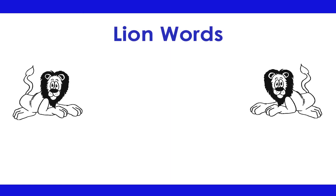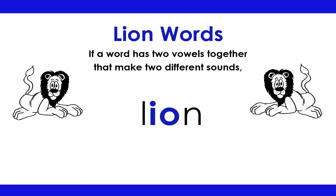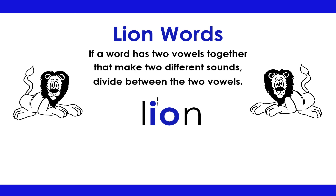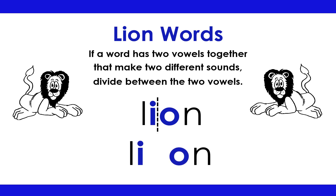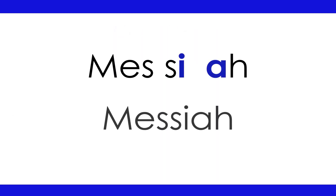Lion Words: If a word has two vowels together that make two different sounds, divide between the two vowels. Lion: Li-on. Messiah: Mes-si-ah.